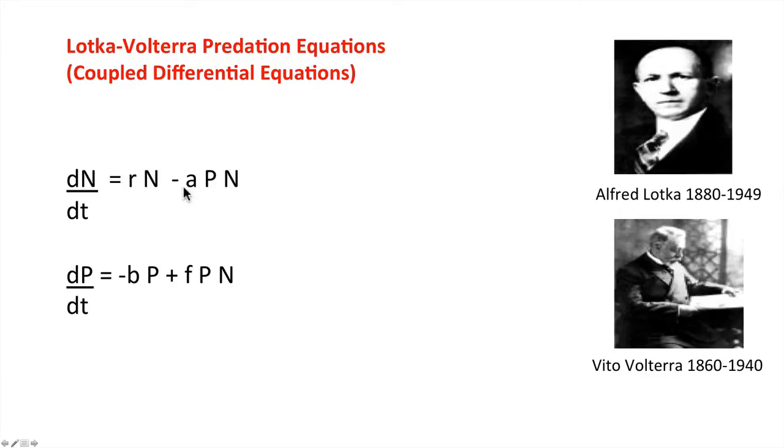However, we also have a loss of prey caused by predation and what we use here is a constant a and then a mass action term where the more predators there are the greater the loss of density of the prey population, but also the more prey there are the more predators will encounter them and so the greater the instantaneous rate of loss.